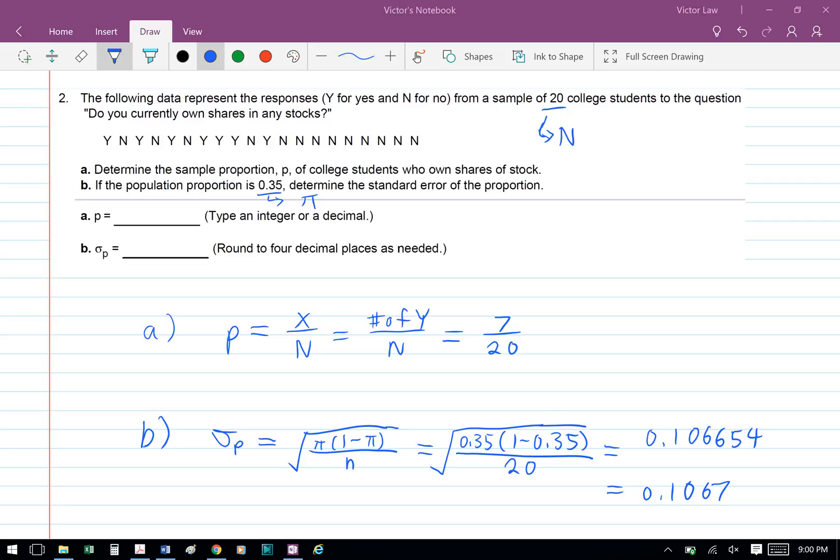If we substitute the numbers in, we're going to get standard error of the proportion equals 0.106654, which is 0.1067.